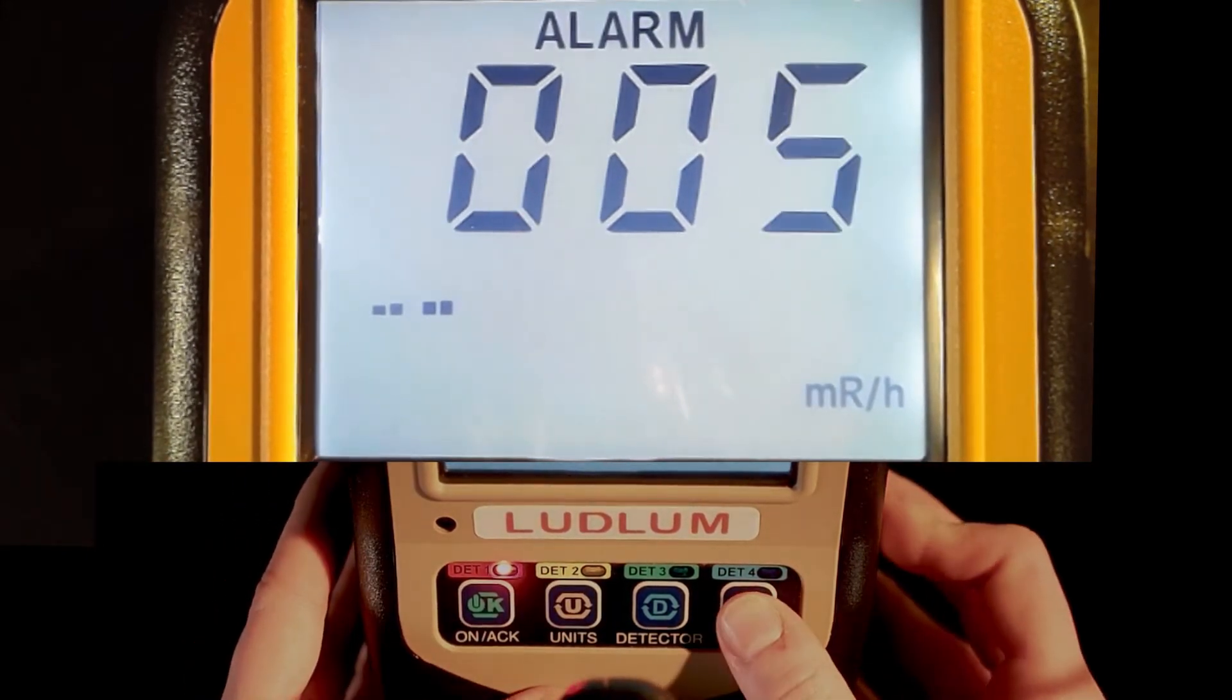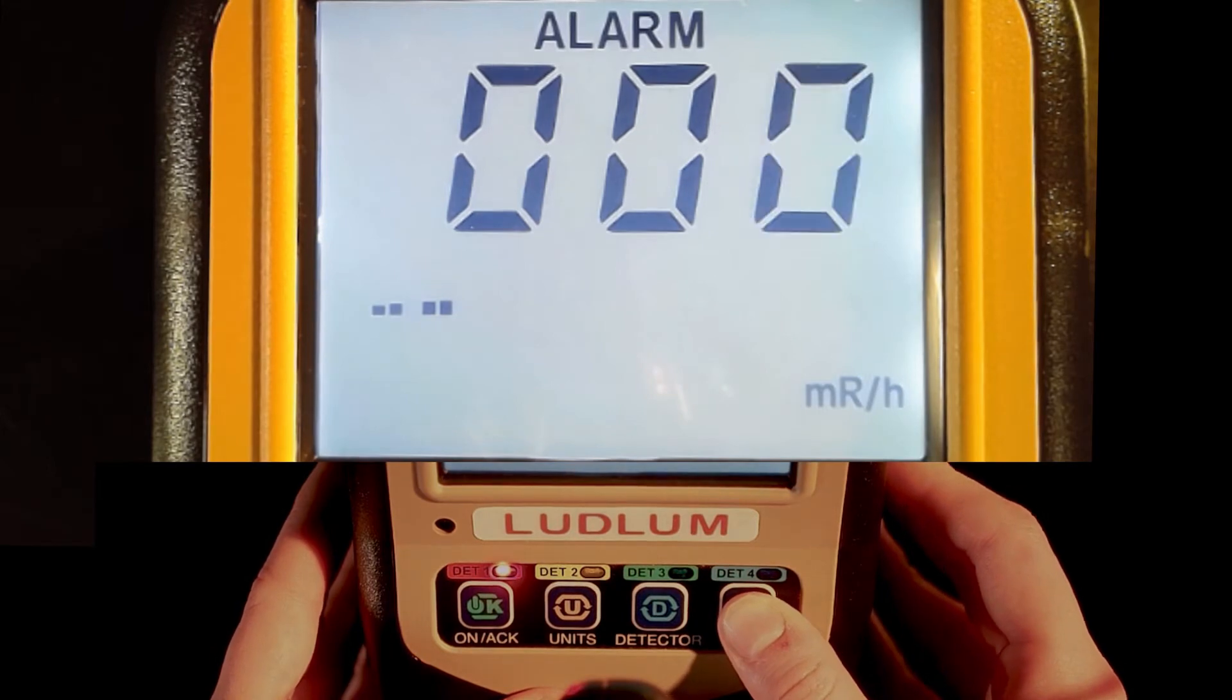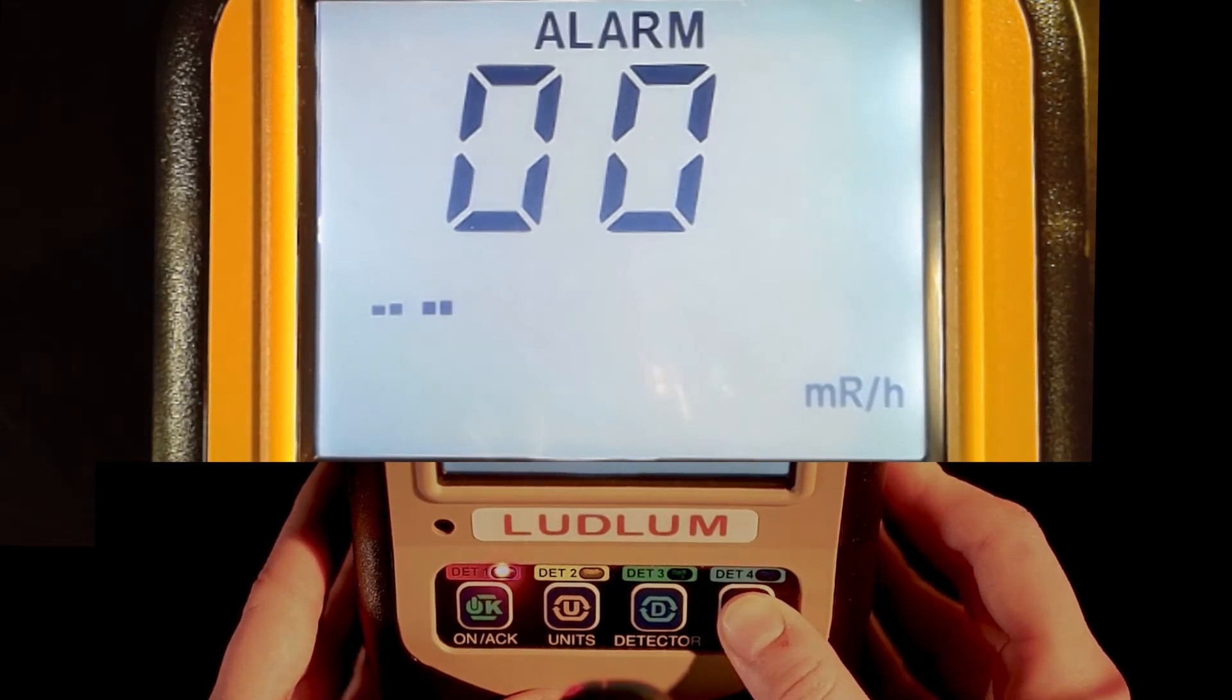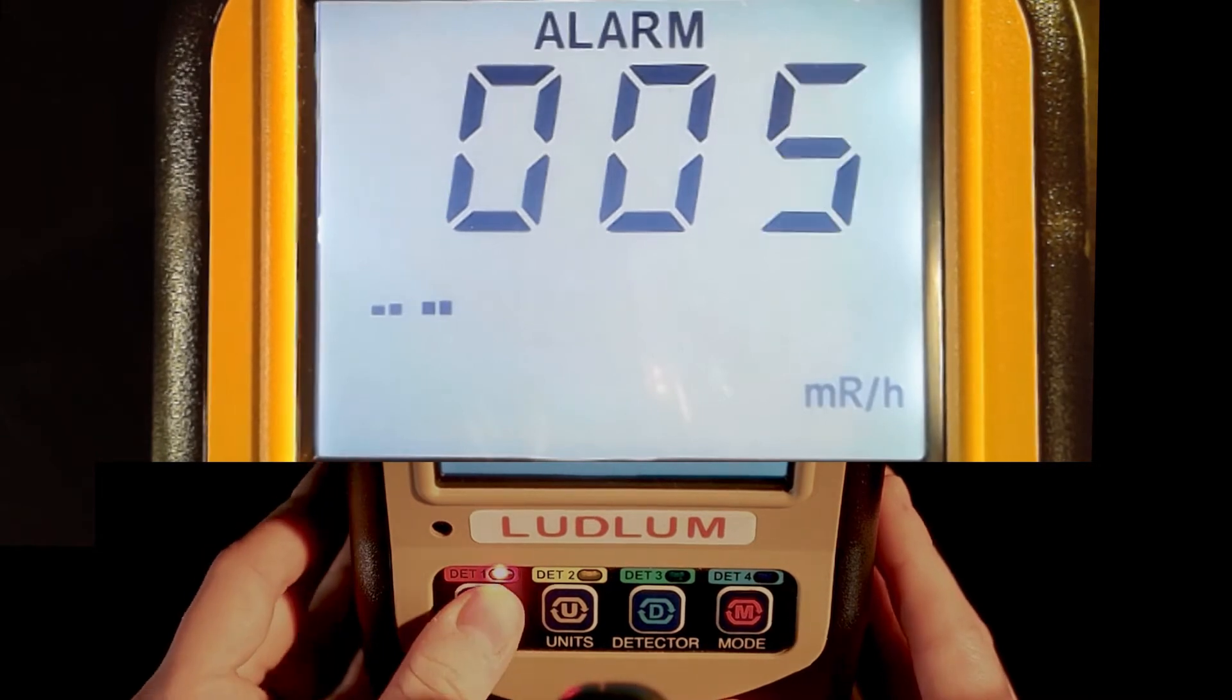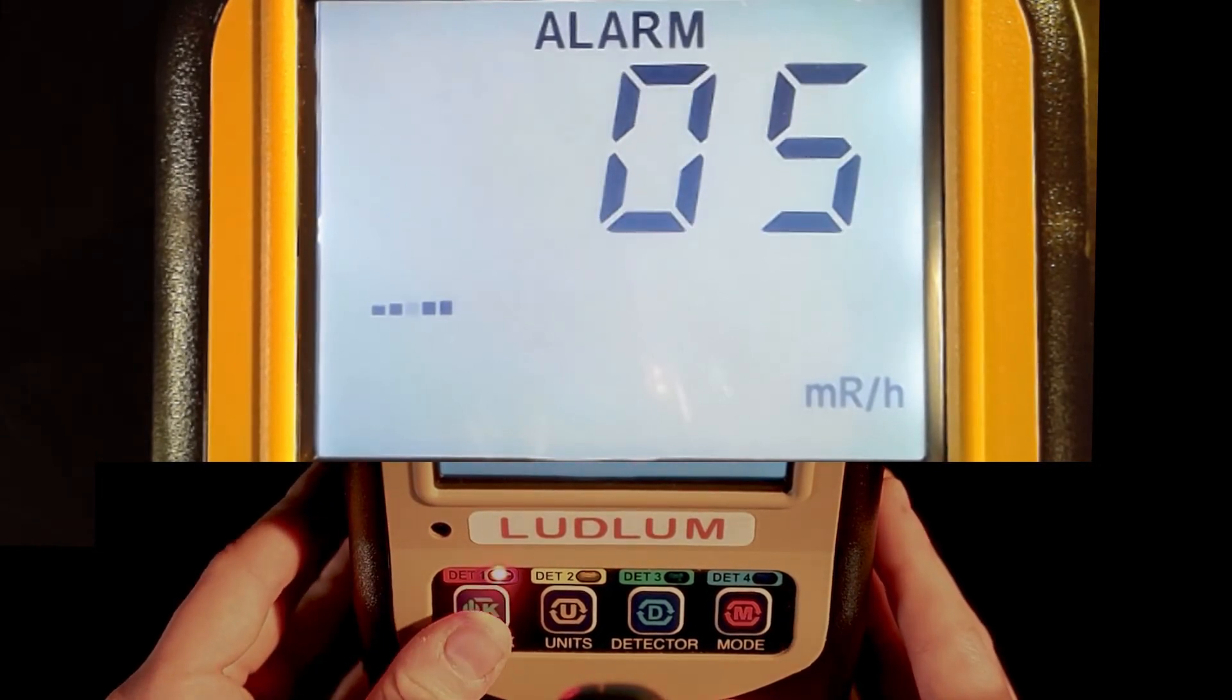The digit that is flashing can be adjusted upwards by the MODE button. If you need to change another digit or change the alarm units in the bottom right corner, press the ON ACK button as needed.